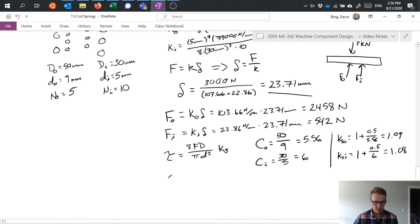Tau_outer equals 8 times the force taken up by that spring times the diameter, pi times 9 cubed times 1.09 equals 467.94 megapascals.